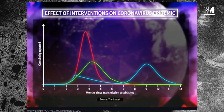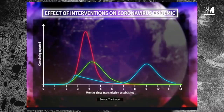I want to get out this graph because this graph was again on Newsnight — they said they got it from the Lancet. And I think this really just helps you understand all the different theories. On the y-axis, you've got cases being reported. On the x-axis, you've got months since transmission established.